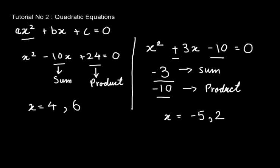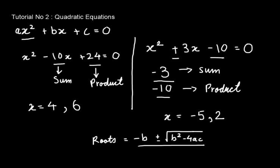If there is a difficult quadratic equation for which you cannot find the roots by looking at the sum and product, we have the quadratic formula: x = (-b ± √(b² - 4ac)) / 2a, where a, b, c are the coefficients of x², x, and the constant term respectively. However, for the GRE, quadratic equations are pretty simple and the sum-and-product method solves them really fast, so let's look at some GRE examples.